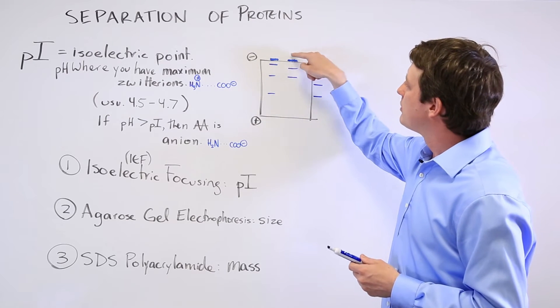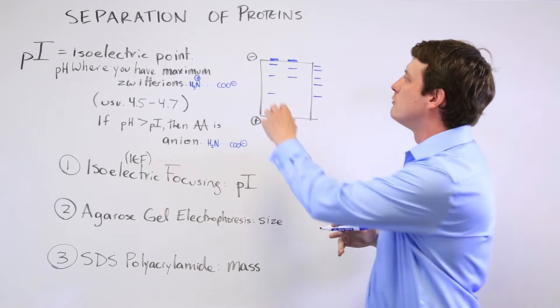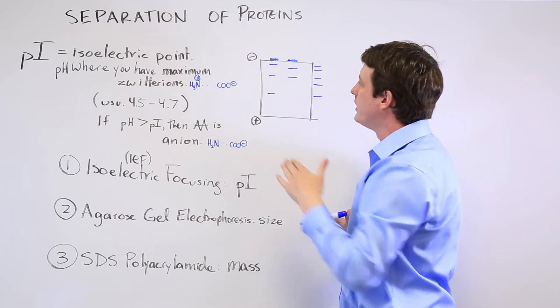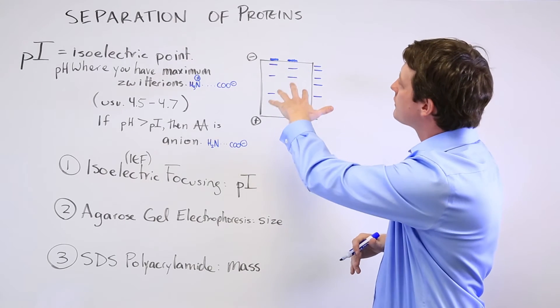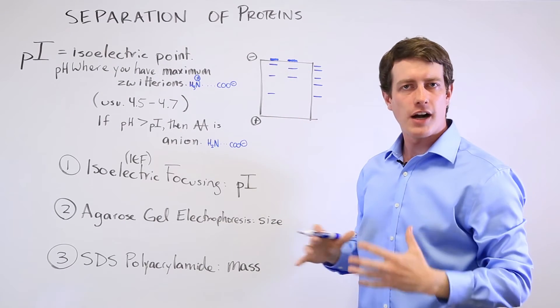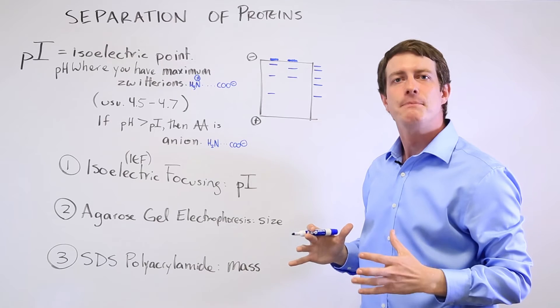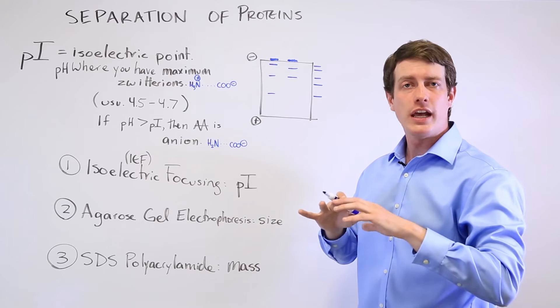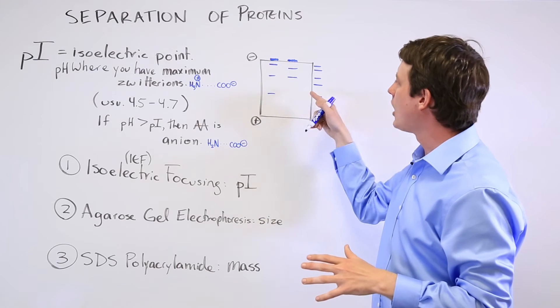Then you set up the proteins here and run them through with a negative charge on this part and a positive charge on the other side. They will move through until they reach their isoelectric point, their pI. And at that point, they will go from being an anion into a neutrally charged compound and they will stop there.